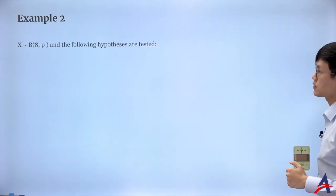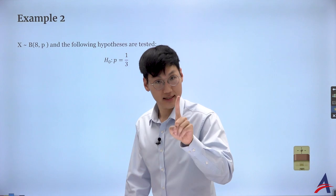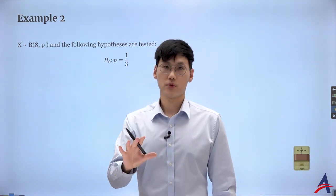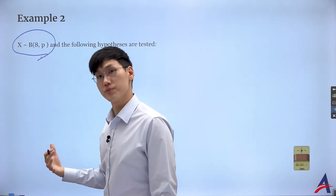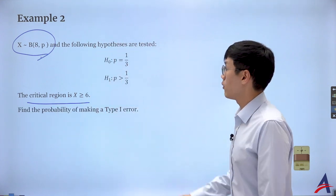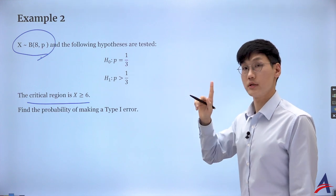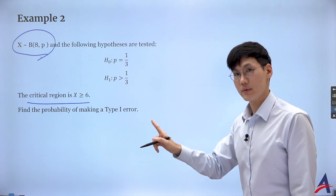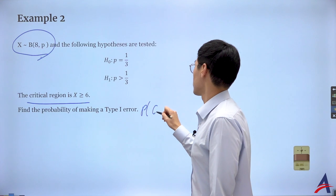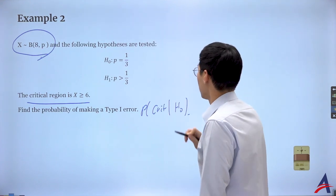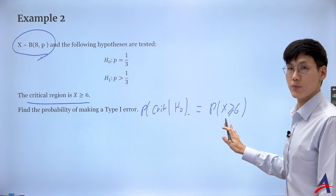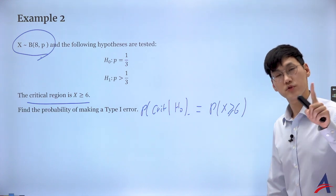Let's look at the second example. This is very kind because they give you the binomial distribution directly — you don't have to decide. They also give you the critical region, and ask you to find the probability of a type 1 error. Here, instead of giving alpha, they give you the critical region. So type 1 error is the probability of the critical region given the null hypothesis — for example, P(X ≥ 6).